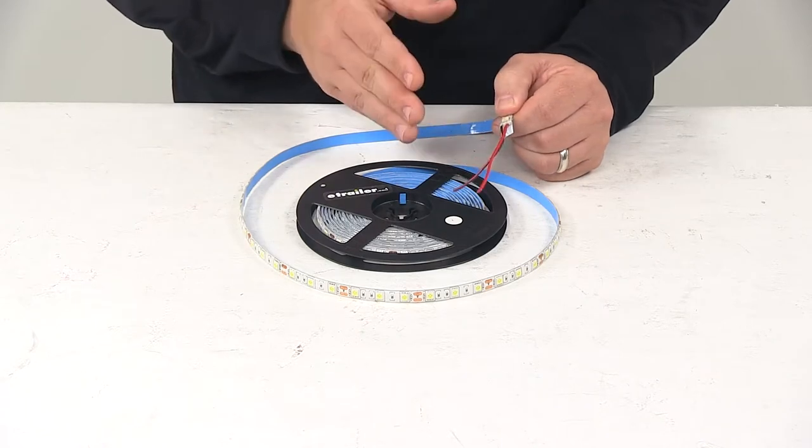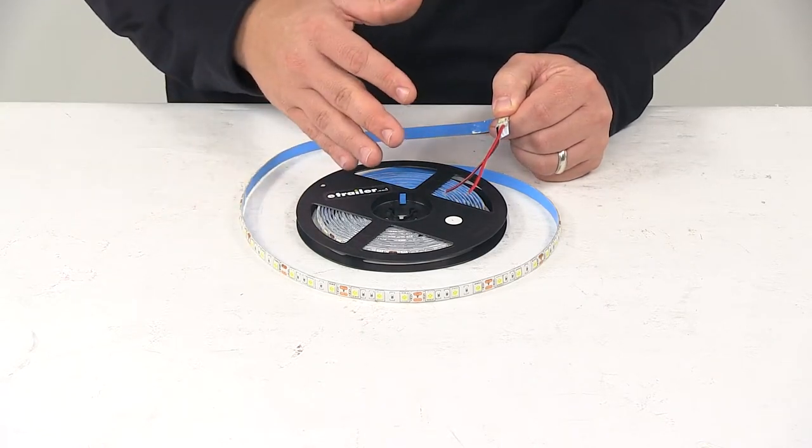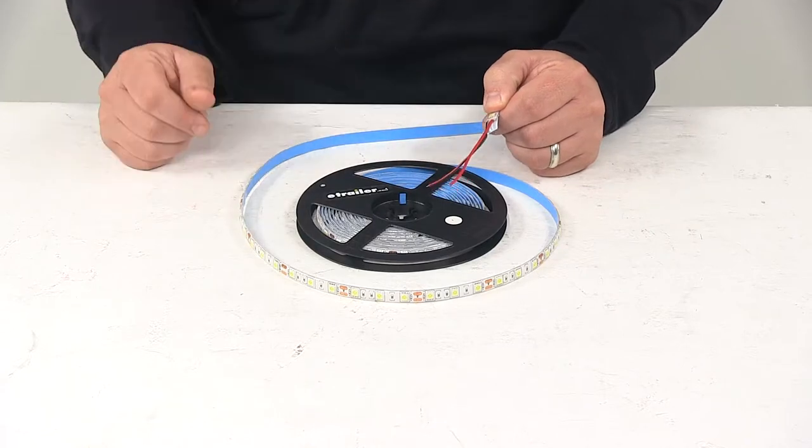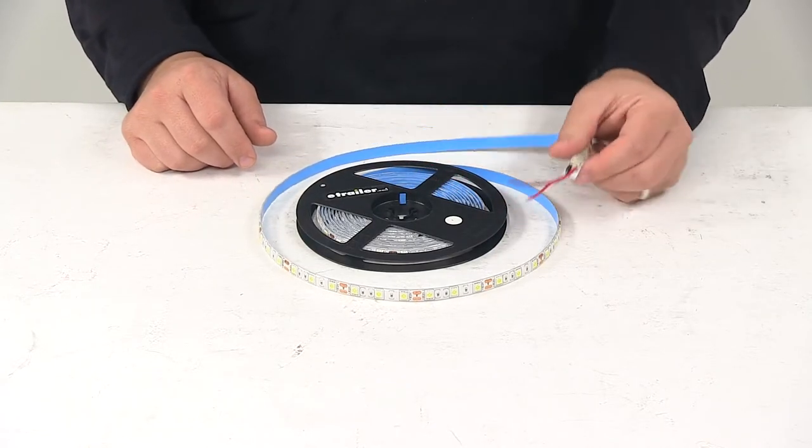There's also an available snap on connector which allows you to easily attach two sections of LED light stripping. Part number A90P1B. That's sold separately.